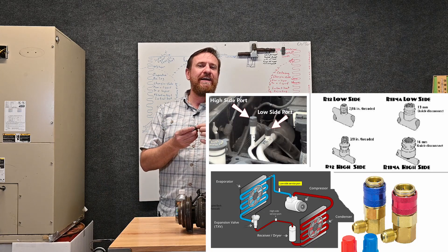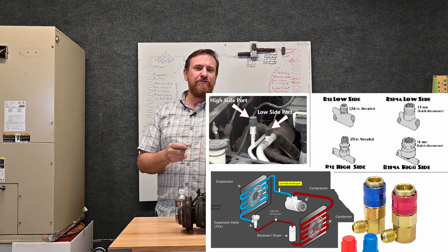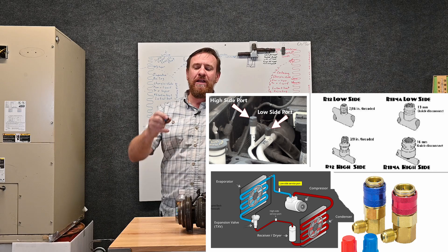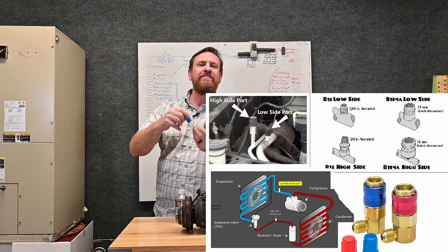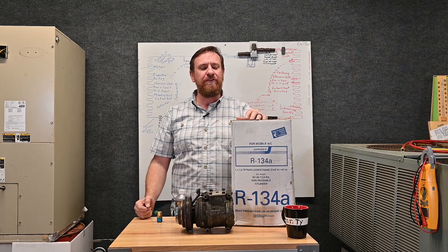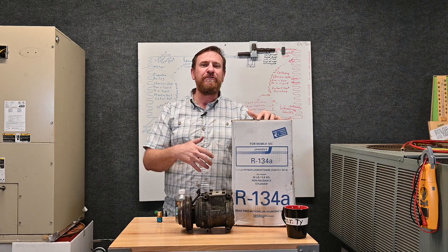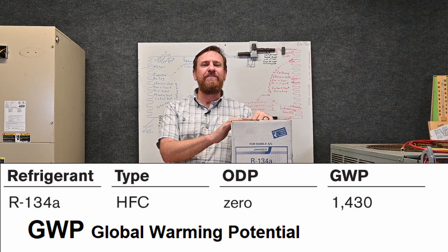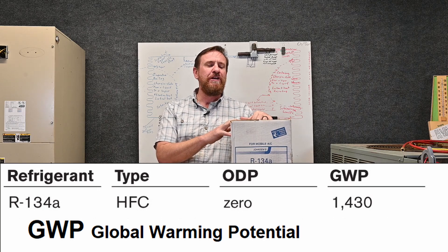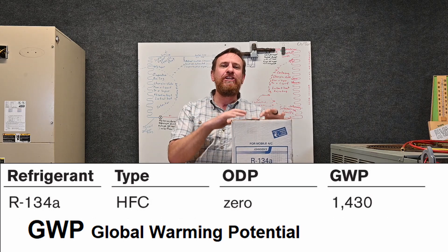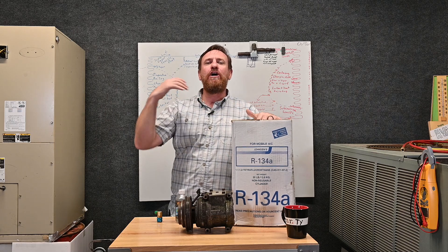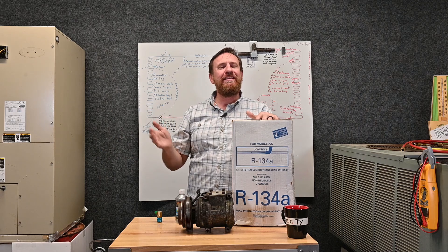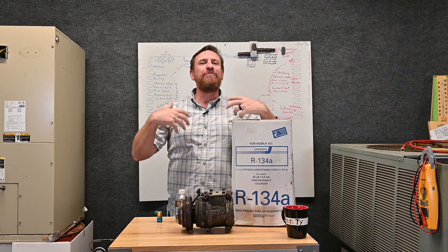On the automotive side, they replaced the standard-size fittings for the gauges with quick-connect adapters. All new vehicles have these quick-connect style adapters — you can still buy an adapter that goes from the quick connect to your gauge port, similar to an air compressor connection that snaps and locks on for charging, pulling a vacuum, or whatever servicing you need. Now R134A is not an ozone-depleting refrigerant, so it did not tear down the ozone layer. However, years later they found out that R134A does have a GWP — global warming potential. Other countries call it climate change potential, but in the US it's called global warming potential.